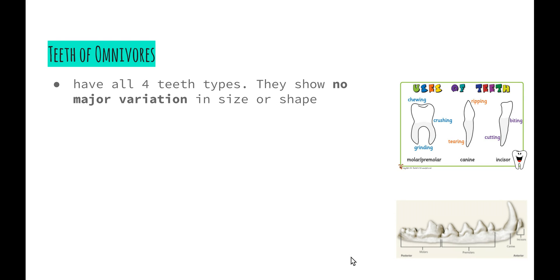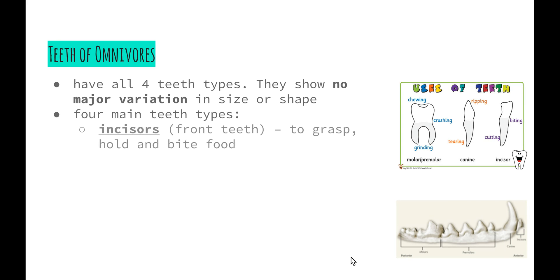Omnivores have all four teeth types, and there's really no major variation in the size or shape of these different teeth. The four main teeth types include the incisors, which are our front teeth, used for grasping, holding and biting our food. For example, when you bite into an apple, you use those front teeth to grasp the food, hold it, and then pull it away from your mouth to bite off a piece.